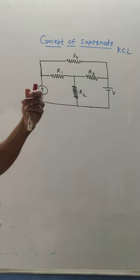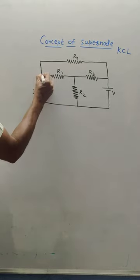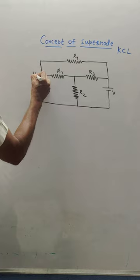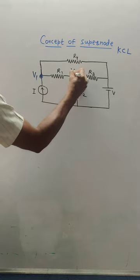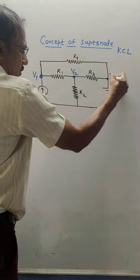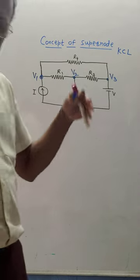So let us mark the nodes. This is one node, I will mark it as V1. Second node V2. Third node V3. A node is a point where different branches are connected.